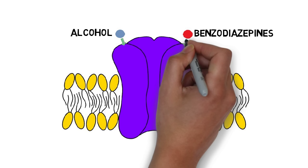Because GABA can reduce neural transmission, increased GABA activity can have sedative effects. Accordingly, a number of drugs that have such effects, like alcohol and benzodiazepines, increase activity at the GABA receptor.